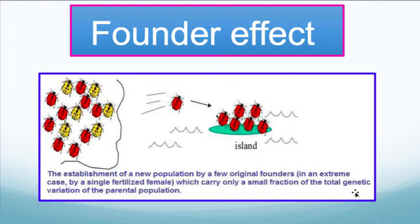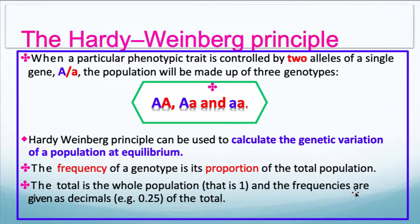The founder effect is an example of genetic drift — it's the establishment of a new population by a few original founders, in an extreme case by a single fertilized female, which carries only a small fraction of the total genetic variation of the parental population. This is similar to what was just described with human populations.